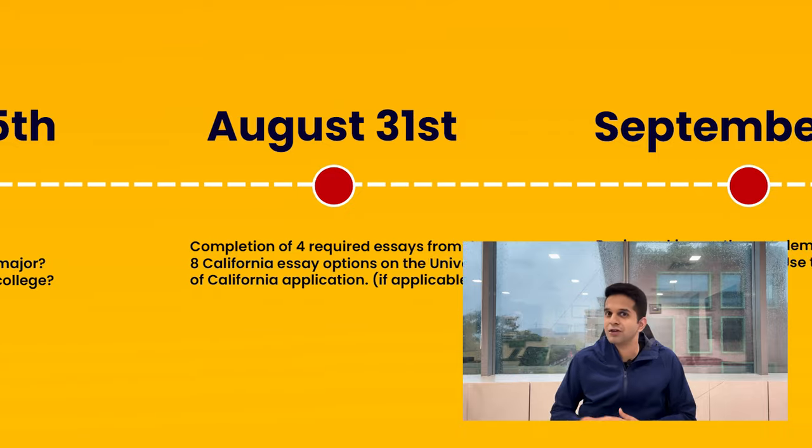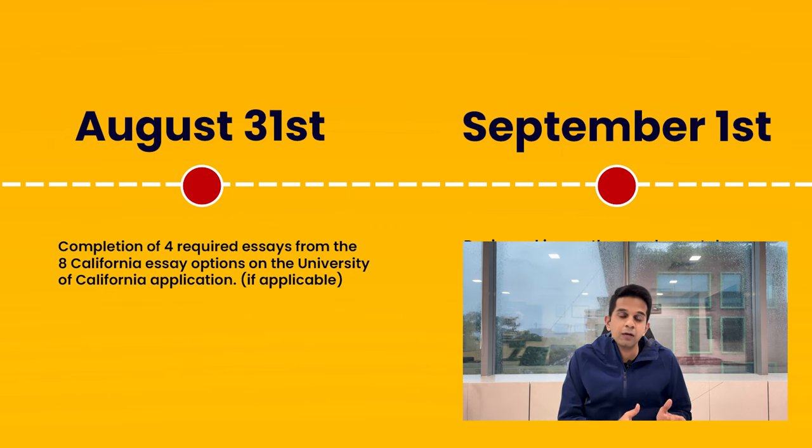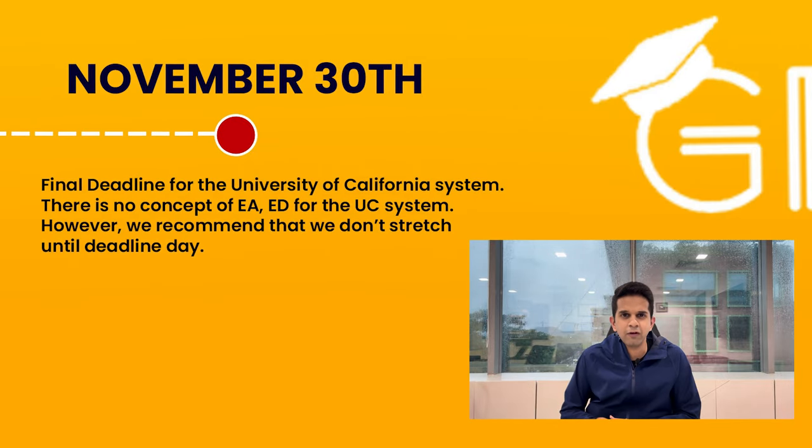The next milestone is the 31st of August, by which you need to tackle the University of California essays. Keep in mind these essays are applicable only if you're applying to universities in California. The UC system gives you 8 essay topics to choose from and you write any 4 of them. Although the UC deadline is much later — November 30th — the essay prompts are already out early in the year, so you have time to evaluate which ones you can write best. The advantage of finishing UC essays early is that some of these topics will repeat on your Common App supplementary essays, helping you cover a lot of ground efficiently.